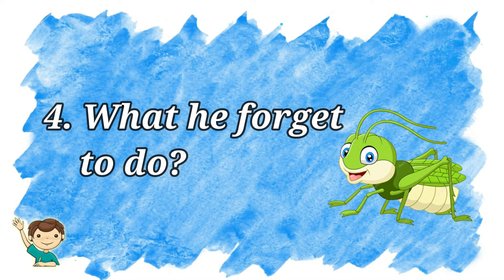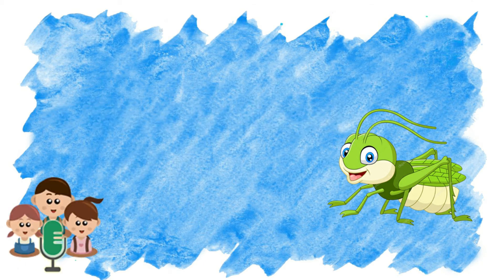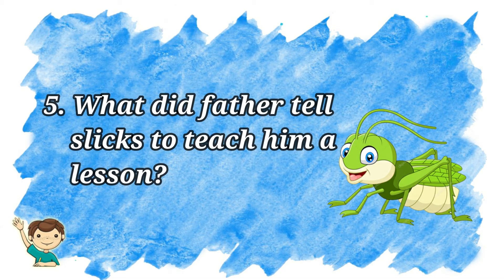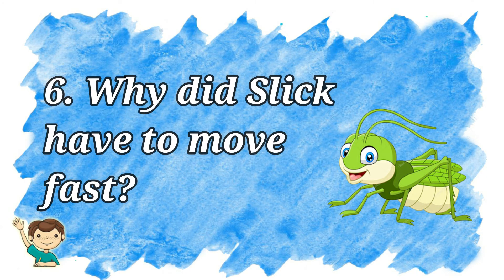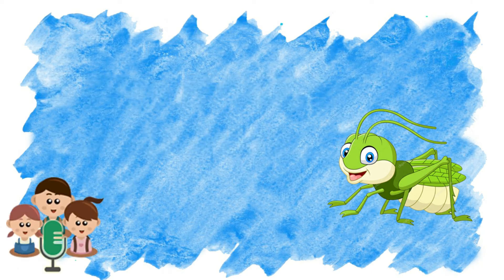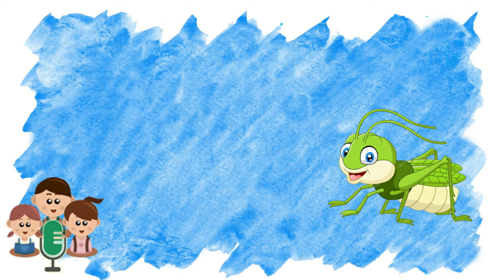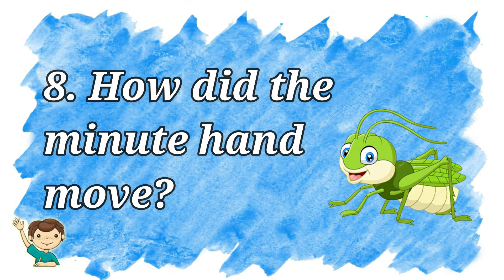What did he forget to do? What did father tell Slick to teach him a lesson? Why did Slick have to move fast? Did Slick sleep well? How did the minute hand move?